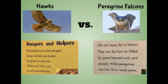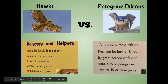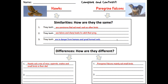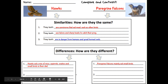This time let's look at dangers and helpers for each animal. For hawks, red-tailed hawks face dangers — some red-tails are hunted by great horned owls, and others are hit by cars or eat poison prey. Let's take a look at peregrine falcons. Life isn't easy for a falcon; they can be hurt or killed by great horned owls and people. Wild peregrines can live ten or more years. In the subtopic on dangers, we found another similarity: both hawks and peregrine falcons are in danger from humans and great horned owls. Unfortunately, we didn't find another difference in that subtopic, so we still have one blank spot. Take a moment and think back to what you learned about hawks and peregrine falcons last week to see if you can fill in the final difference by yourself.